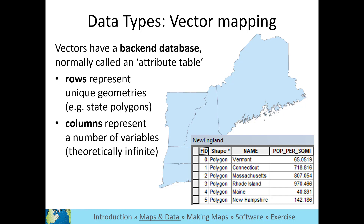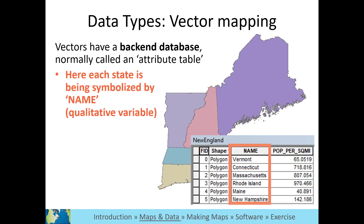Vector data can have a large number of columns associated with their geometries, each of which can then be symbolized to produce different maps. The map can be symbolized based on any column in the attribute table, meaning the color, size, shape, pattern, etc. of a feature can be changed to correspond to the data in a particular column.